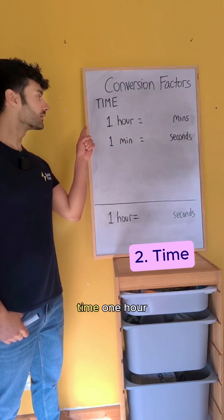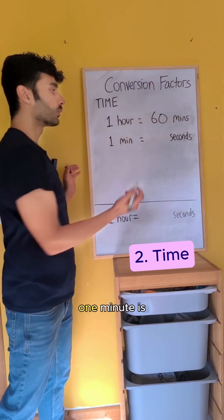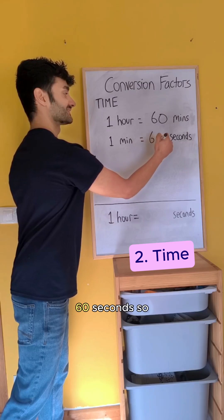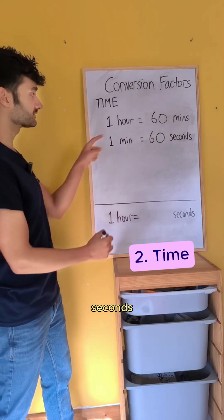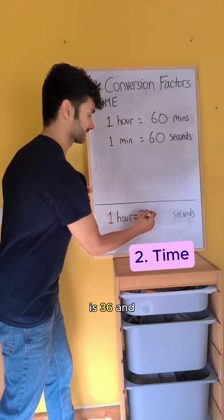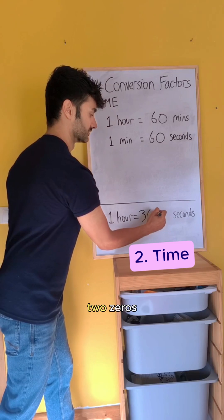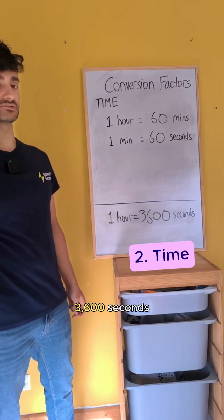Time. One hour is 60 minutes. One minute is 60 seconds. So one hour in seconds, six times six is 36 and the zero and the zero make two zeros, 3600 seconds.